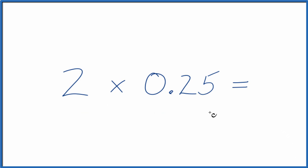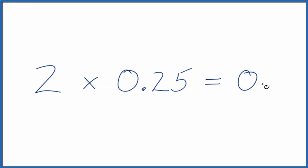First off, you could just, on your calculator, multiply 2 times 0.25, and you get 0.5. So that's the first way you could do it.